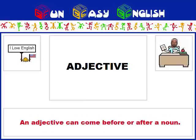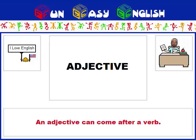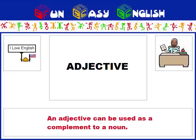An adjective can come before or after a noun. An adjective can come after a verb. An adjective can be modified by an adverb. An adjective can be used as a complement to a noun.